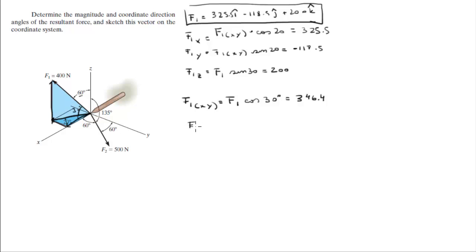Now F2 is easy because you have the coordinate direction angles. So F2 cosine of 60 is the angle that it forms with the X, F2 cosine of 60 is the angle that it forms with the Y, and F2 cosine of 135 is the angle that it forms with the Z axis.